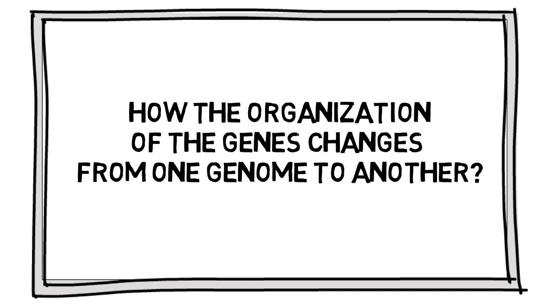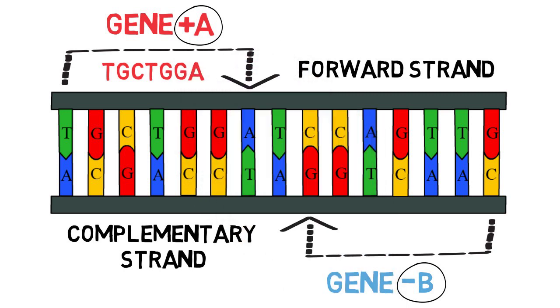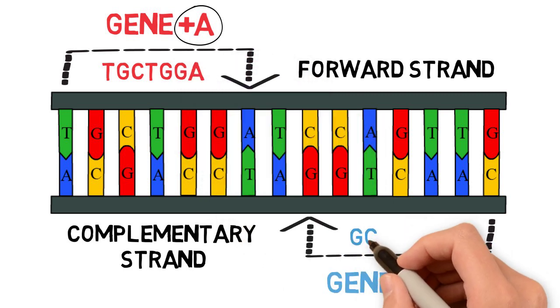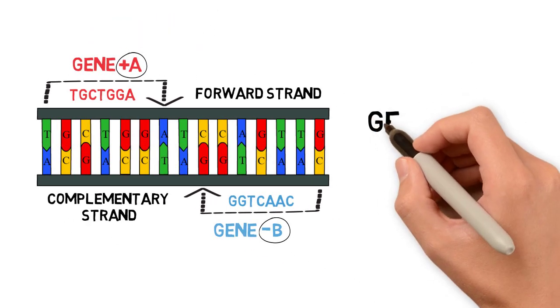For such studies, it is easier to represent the genetic information as a sequence of genes rather than the original nucleotide sequence. These sequences of genes are called gene orders.